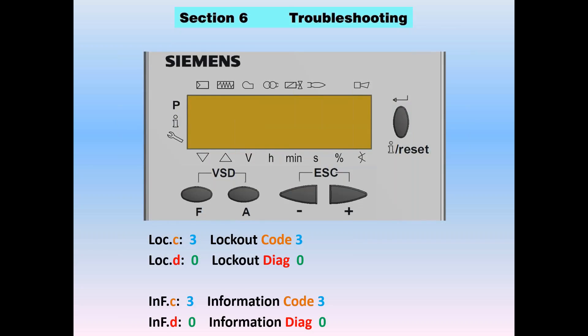When you get a fault on an LMV3, the screen is going to flash between LOCC and LOCD — basically telling us the lockout code (in this case it was 3) and a lockout diagnostic, detail 0. Sometimes the LMV doesn't lock out; it simply gives a fault with an information screen, displaying INFC and INFD for information versus a lockout, which is a shutdown.